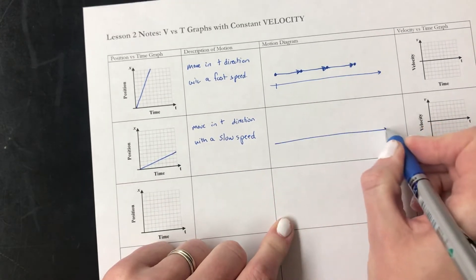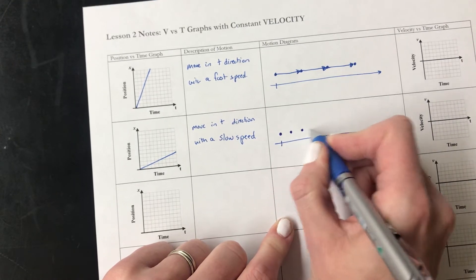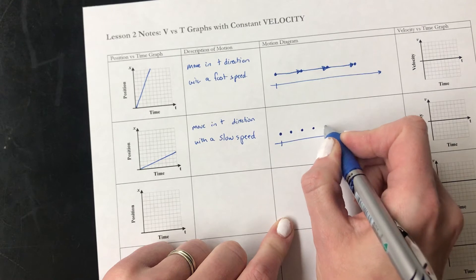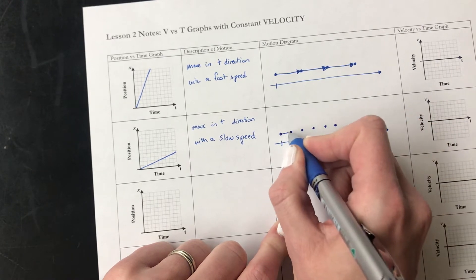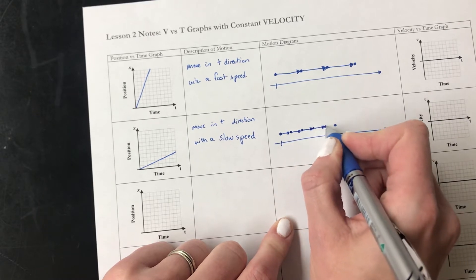And our motion diagram, because it's moving slow, our dots are going to be closer together. Still evenly spaced because it's constant velocity, but the arrows will be shorter. All the same length, but shorter than the last one.